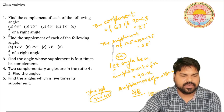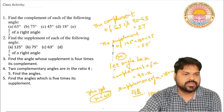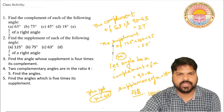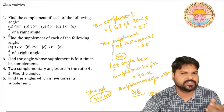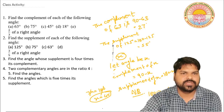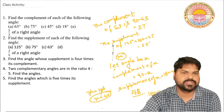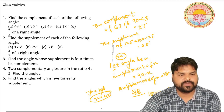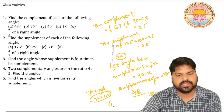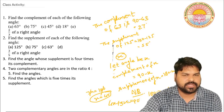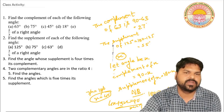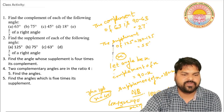Question 4: Two complementary angles are in the ratio 4:5. Find the angles. Since they are complementary, their sum is 90 degrees. Let the first angle be 4x and the second angle be 5x. Then 4x plus 5x equals 90, so 9x equals 90, giving x equals 10. Therefore the first angle is 40 degrees and the second angle is 50 degrees.